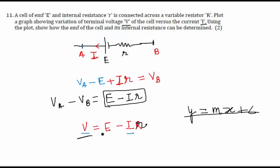Similarly for this equation, we see that there is a positive Y intercept that is equal to E, and there is a negative slope that is equal to minus r.